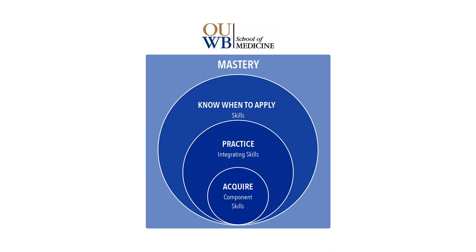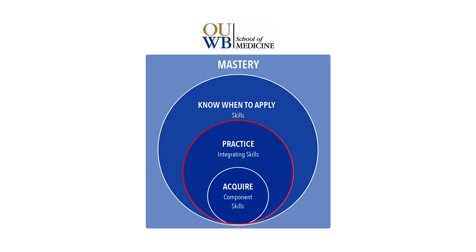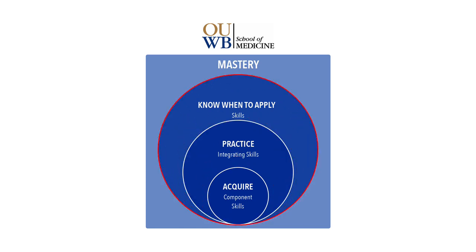Figure 4.1 from 'How Learning Works' provides a simple visualization of the elements of mastery. Here we see how component skills form the root of mastery, and that mastery grows when learners have opportunities to practice integrating various component skills, and eventually learn how and when to apply integrated skill sets at the appropriate time and place.